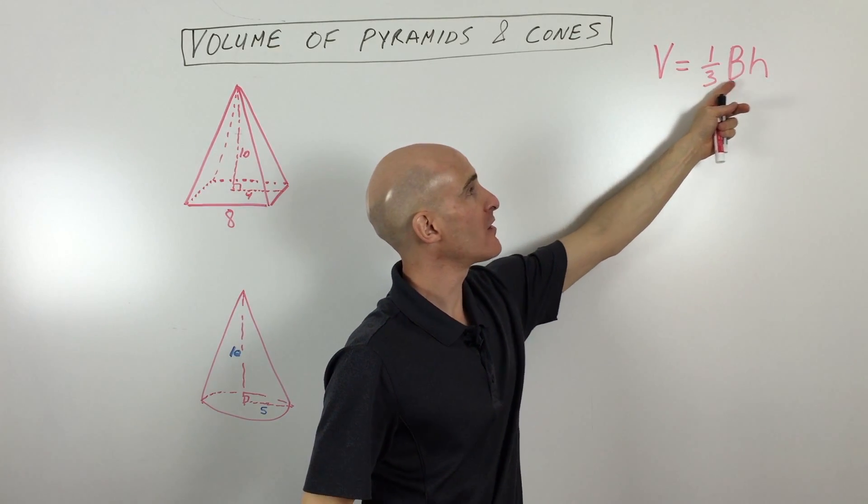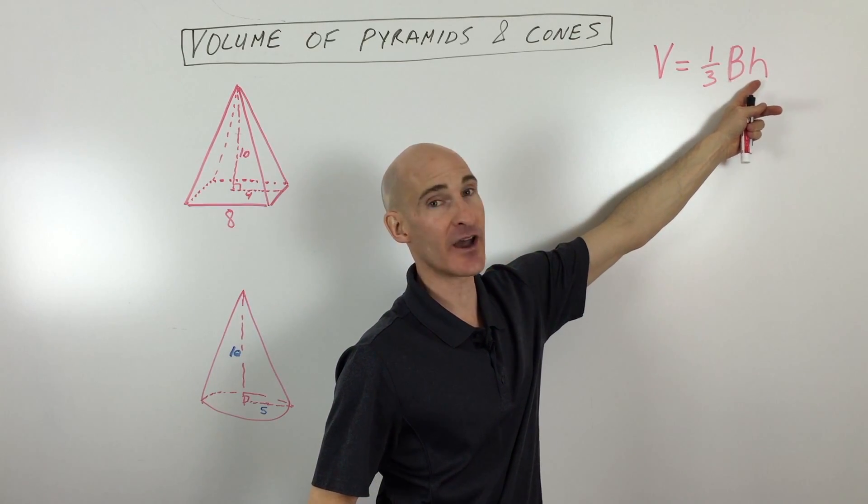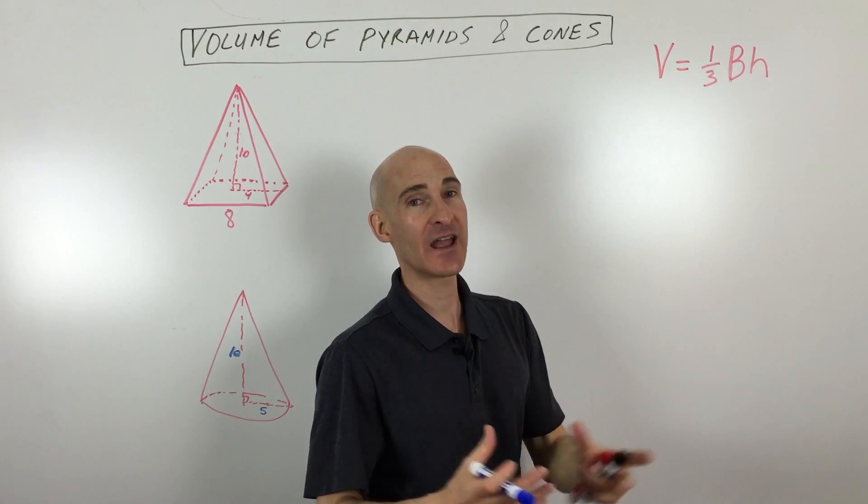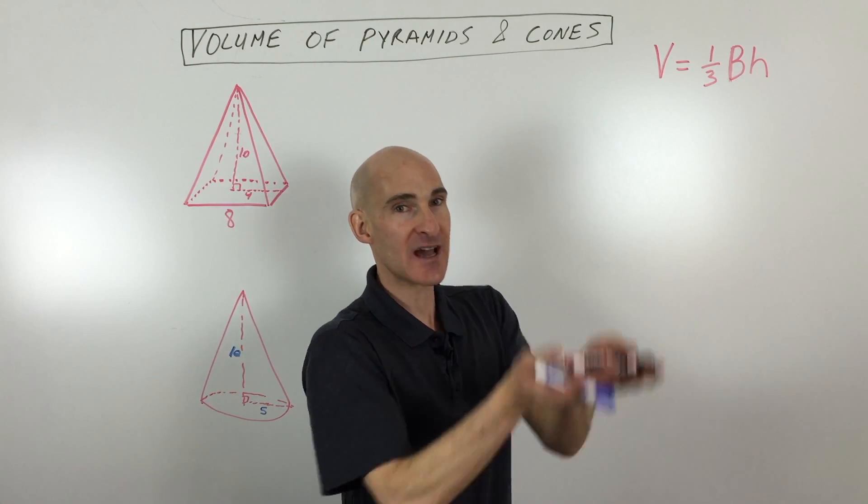It's volume equals one-third, the area of the base, times the height. So when you see that capital B, it means the area of the bottom times the height.